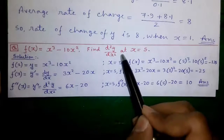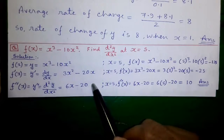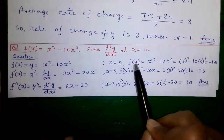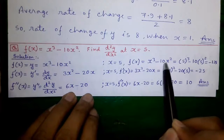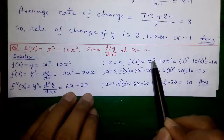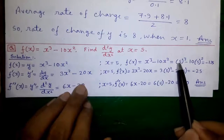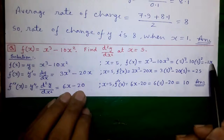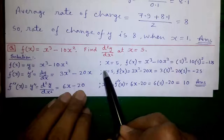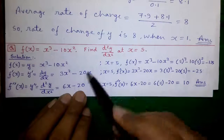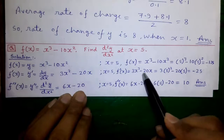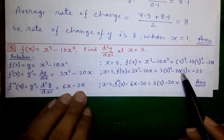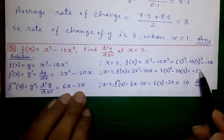Now, if we put x equals 5 in each of them, we get the following. When x equals 5, f(x) = x³ minus 10x² gives us 5³ minus 10 times 5² which equals minus 125. And putting x equals 5 into dy/dx, which is 3x² minus 20x, gives 3 times 5² minus 20 times 5, which equals minus 25.